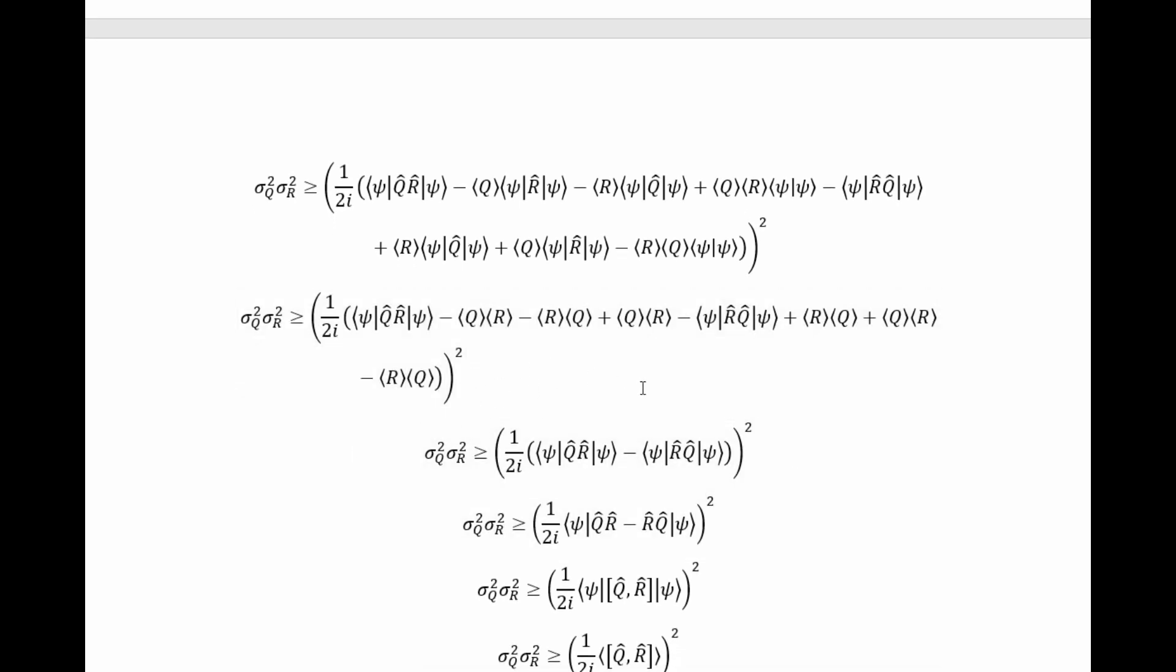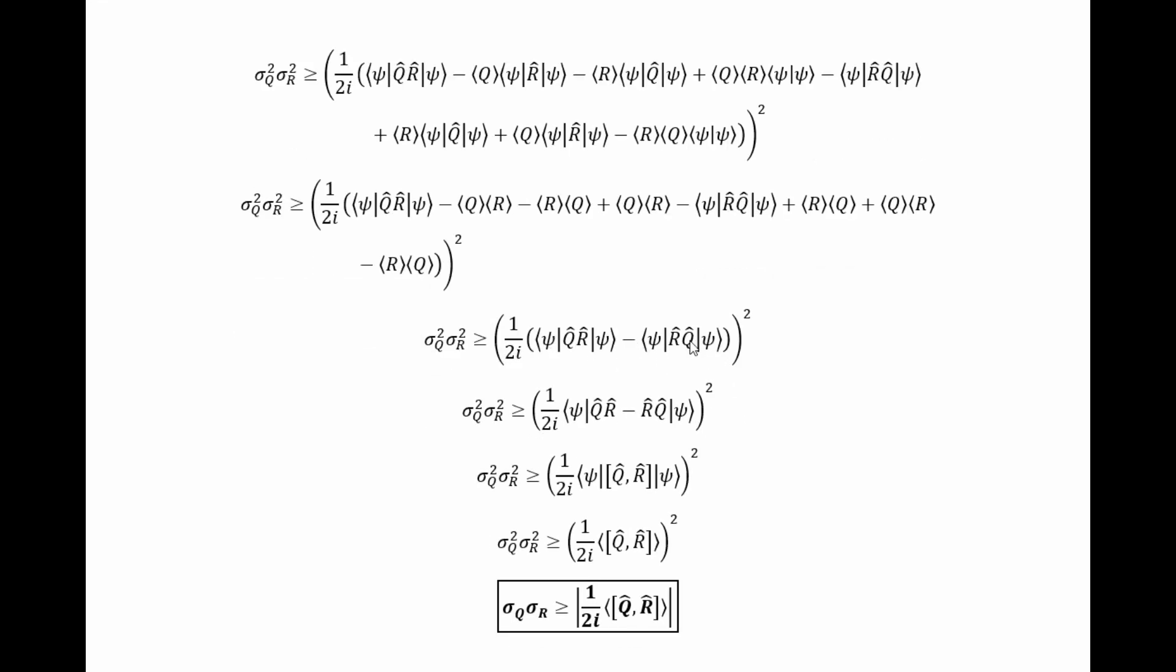Then, we can cancel terms that are the same but with opposite signs. And because these expectation values are just numbers, they do commute, even though the operators don't. Doing that simplifies it down to here. And then, we can undistribute the bra and ket vectors to get this. Then, we recognize the commutator. And we realize this is just the expectation value of the commutator of these two operators.